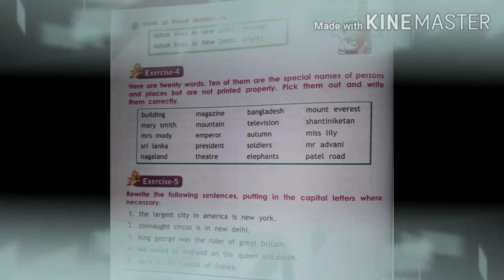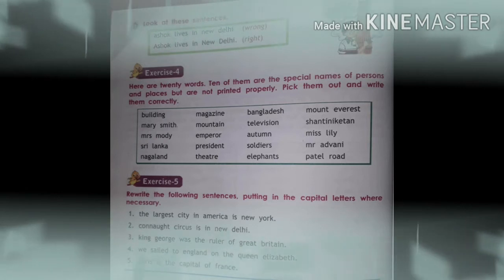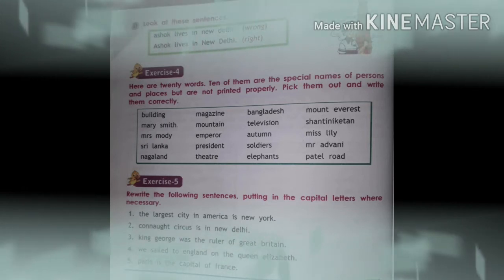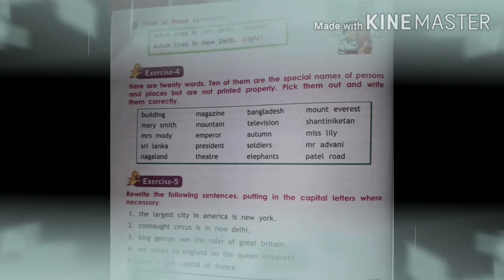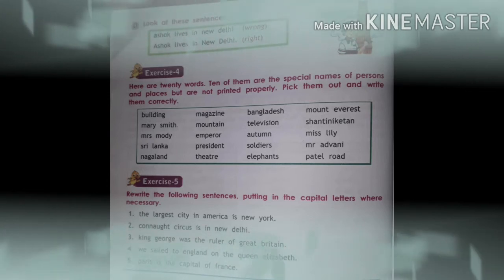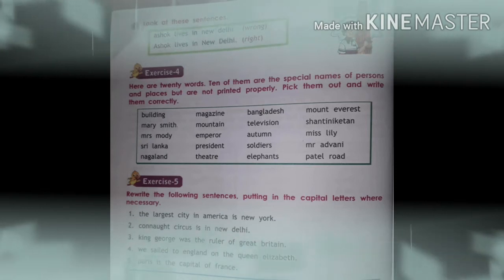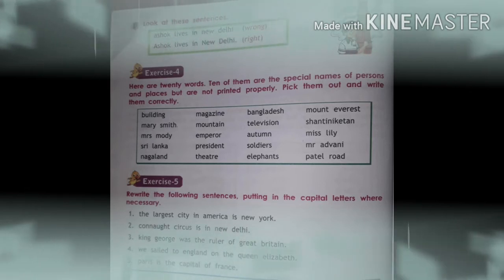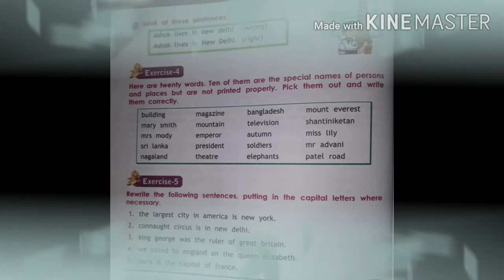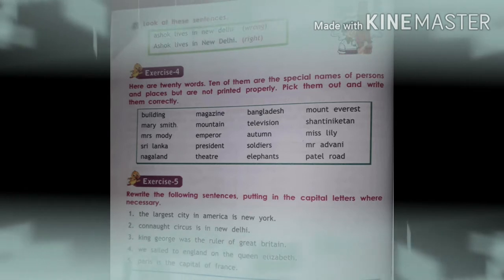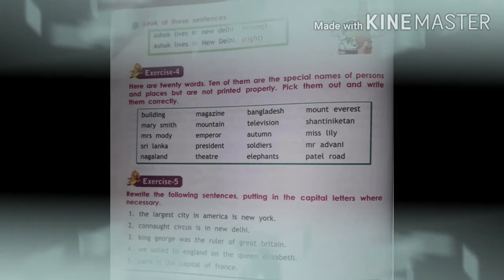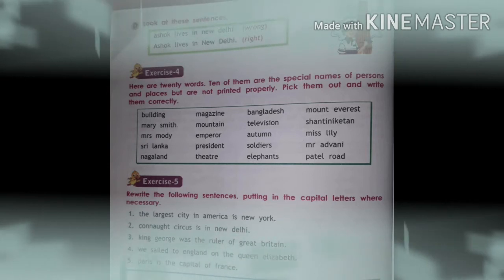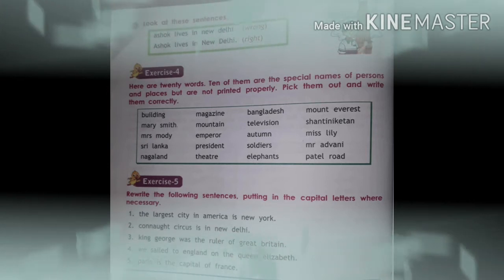We see on page 10 of our book. Look at these sentences. There are twenty words. For example, 'Asoc lives in New Delhi' is a wrong sentence because the first letter A of Asoc is not capital and D of Delhi is not capital. On the second corrected sentence, A is capital and New Delhi — N and D — are capital. So there are twenty words; ten of them are the special names of persons and places but are not printed properly. There are printing mistakes.